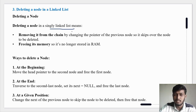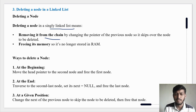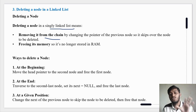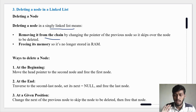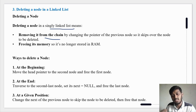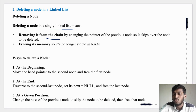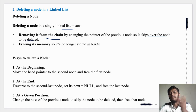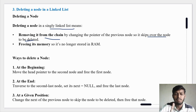Deleting a node in the single linked list means removing it from the chain. We know that all the nodes are connected in the form of a chain. Deleting a node means breaking the chain and connecting to the other nodes. The nodes have two parts: a data field and a next pointer. The next pointer holds an address, and you have to change that address.